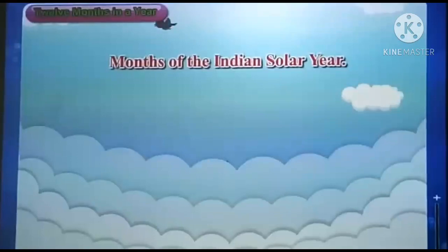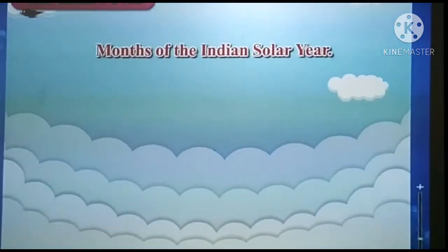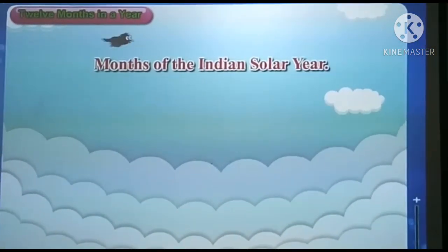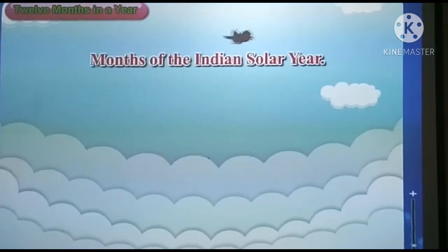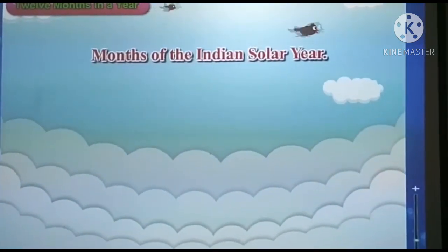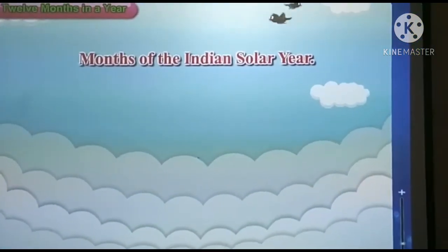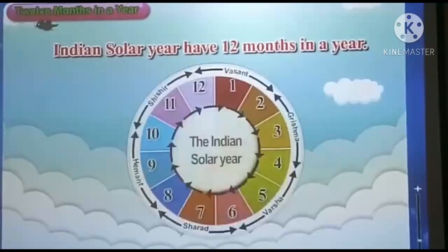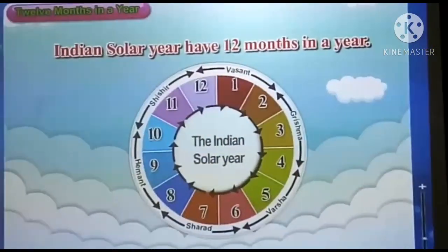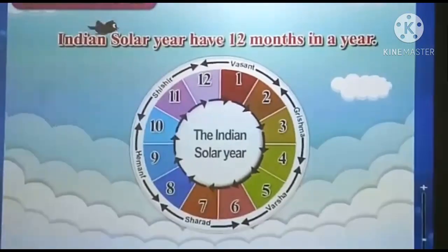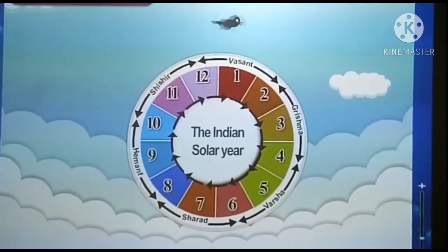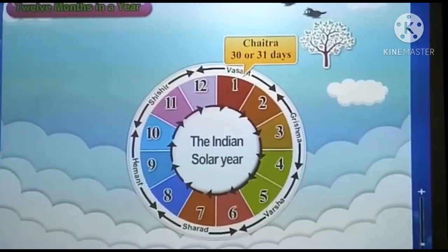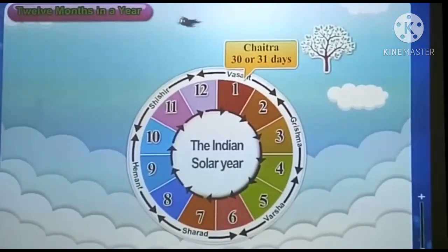Months of the Indian solar year. Children, as we have studied the months of the Gregorian year, now we will study the months of the Indian solar year. As we have 12 months in the Gregorian year, the Indian solar year also has 12 months. Let's see them. Chet month comes first and has 30 or 31 days.